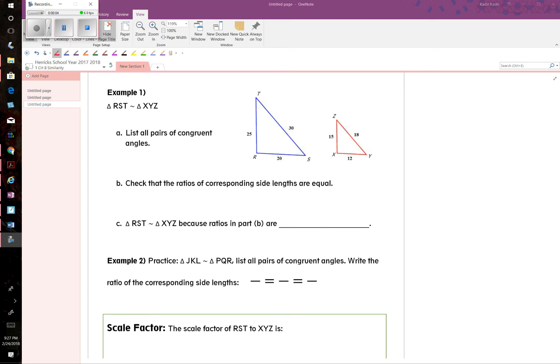Okay, example one. They're telling us that these two triangles—the blue one, triangle RST, and the red one, triangle XYZ—are similar, and they want us to list all congruent angles. Well, those are the angles that correspond.